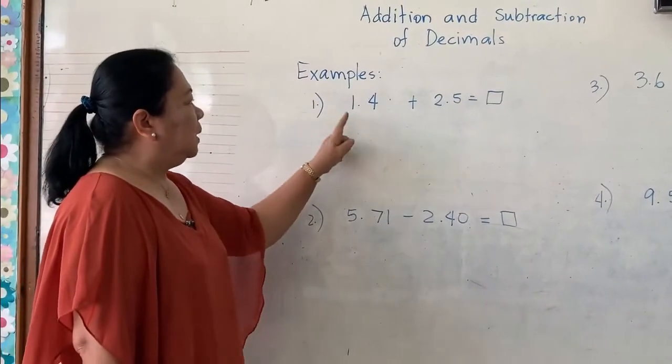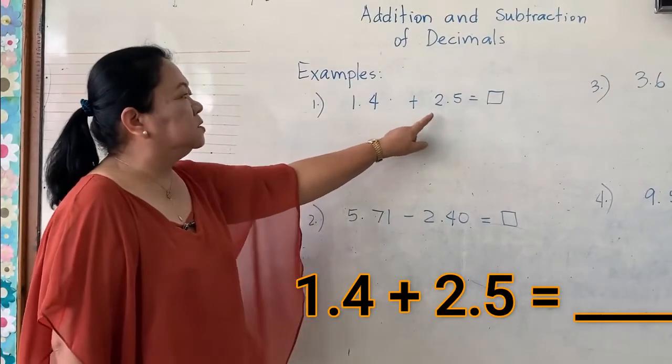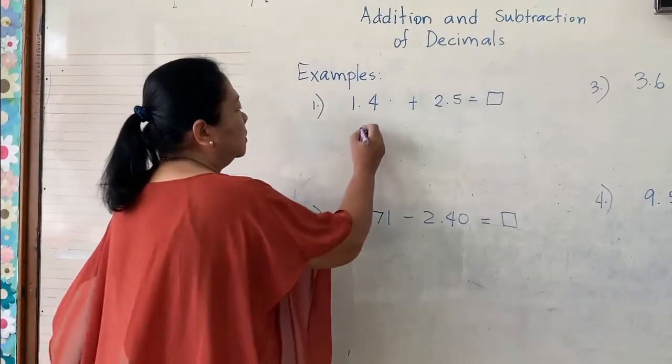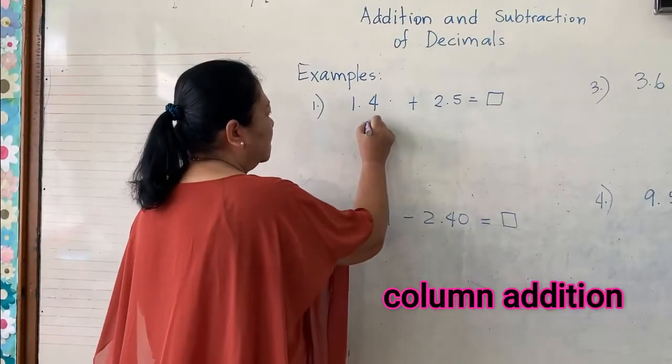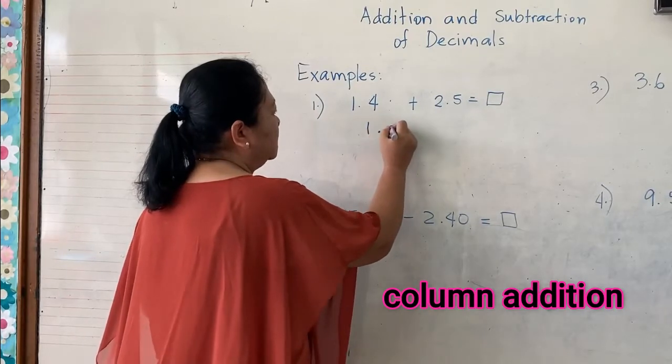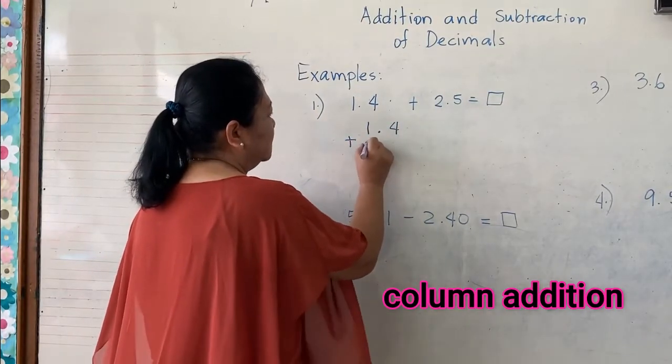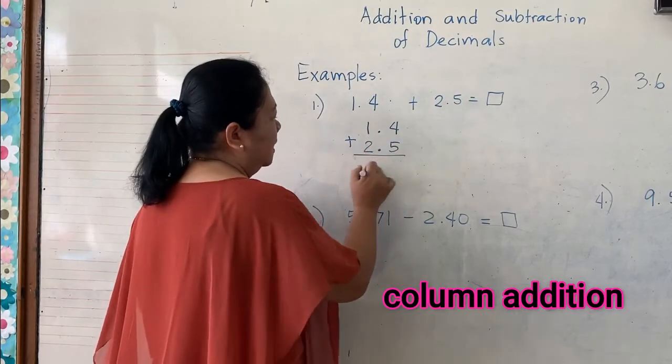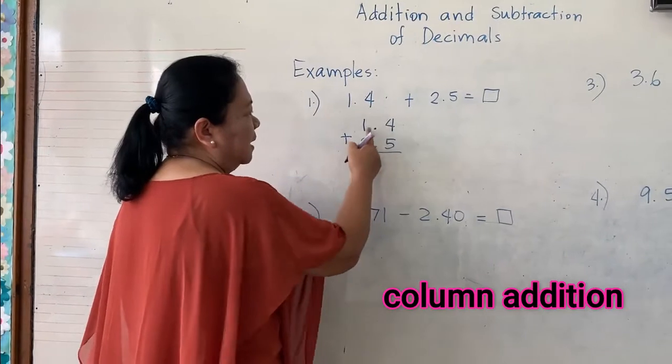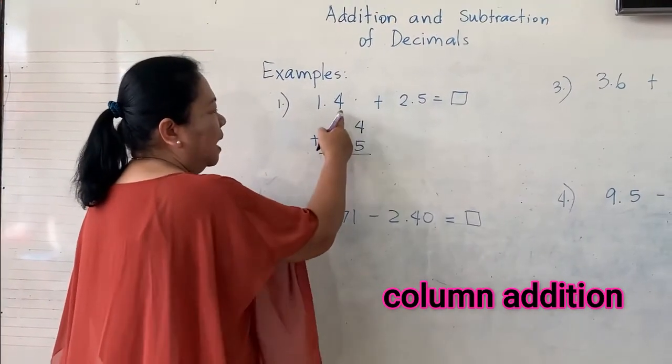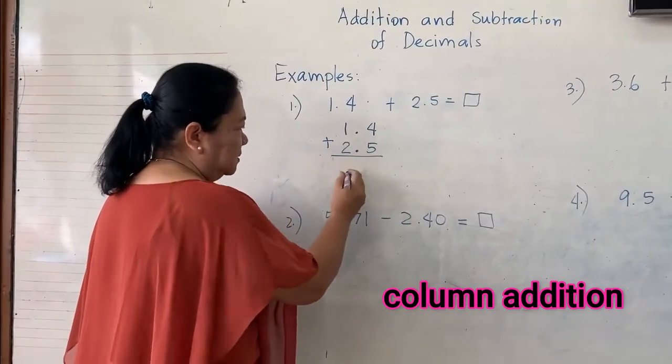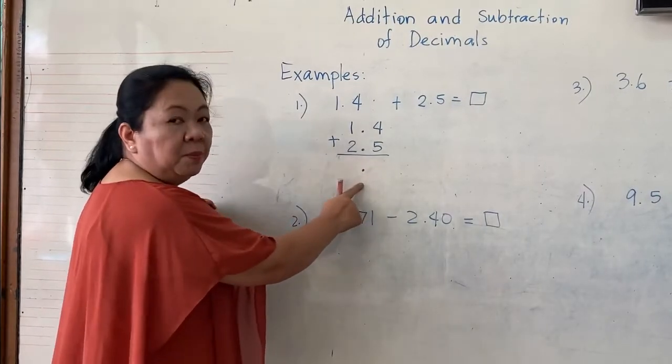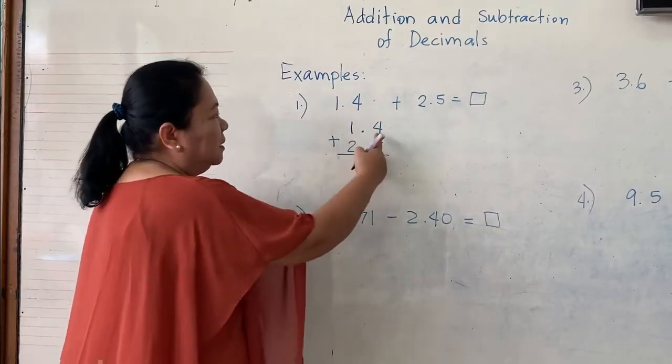Number one, we have 1.4 plus 2.5. I suggest you do column addition. 1.4 plus 2.5. Then, make sure that the decimal points are aligned on a straight line. Therefore, on your answer, your decimal point is also here. Then, you will add from the rightmost digit.